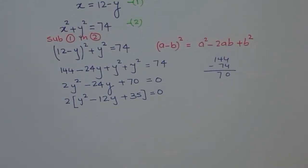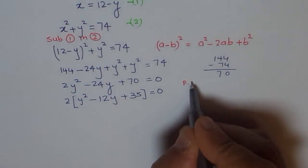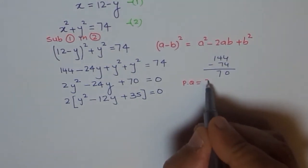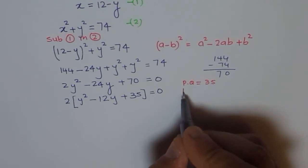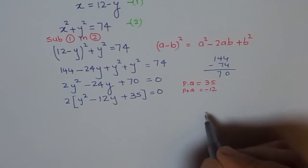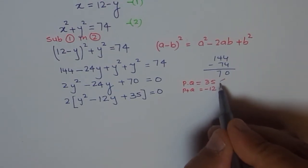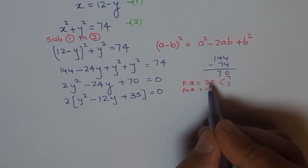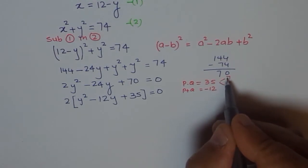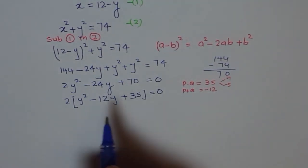So, what should be the product? The product should be, let's say 2 numbers, P and Q. Product should be 35. And sum of P and Q should be minus 12. That means both are same sign and both are negative. So, the two numbers, 7 and 5 will give you 35. We need minus 12. So, both should be negative. So, that should help us to factor this out.